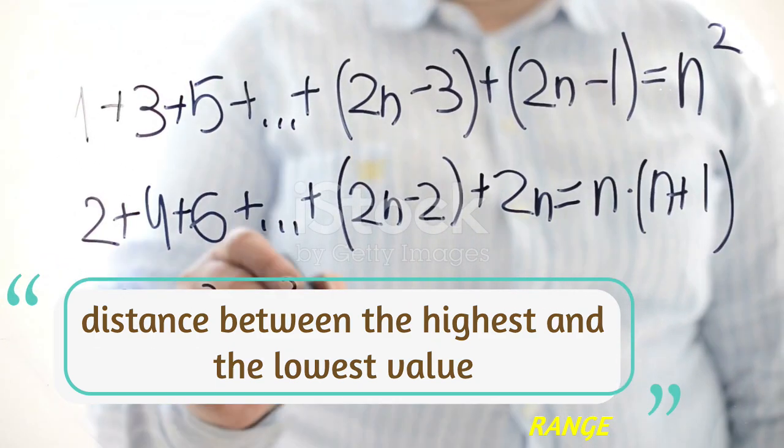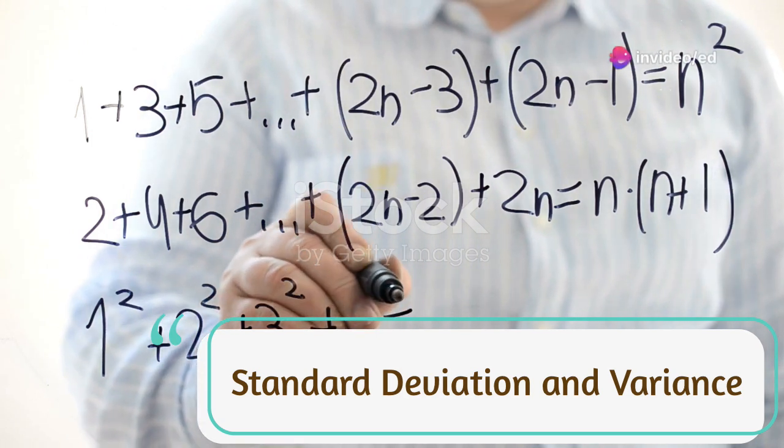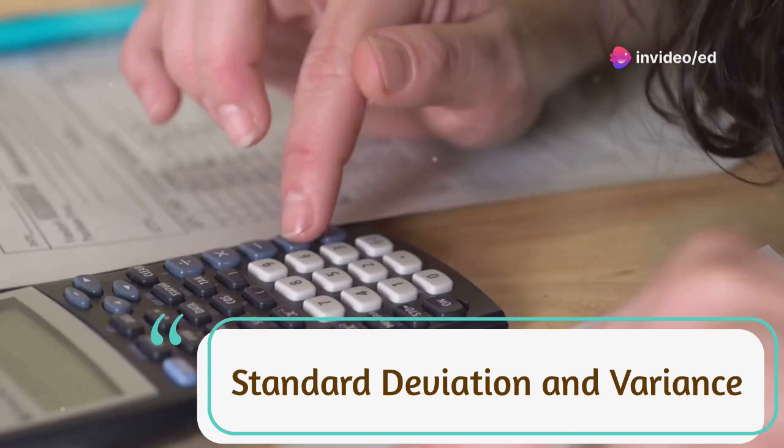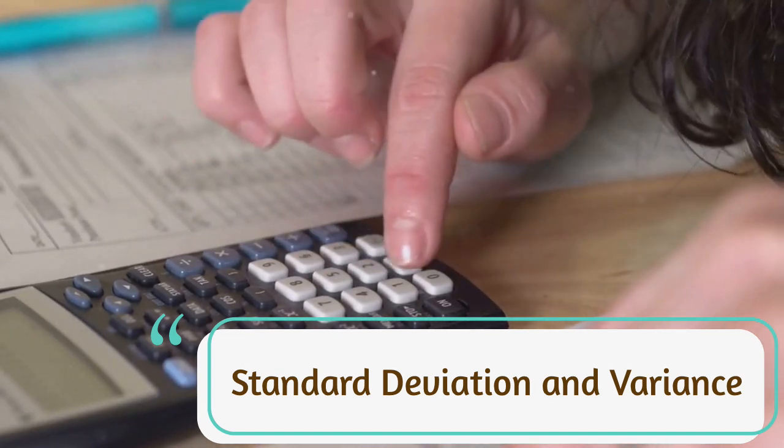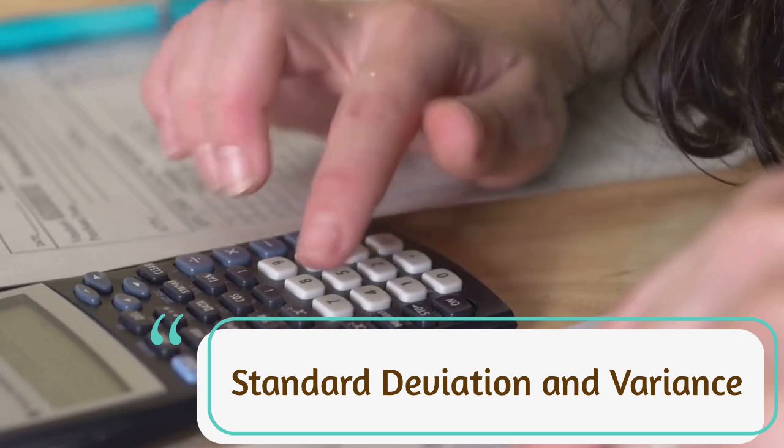Another important measure is variance, which quantifies the average square differences between each score and the mean. This measure provides insight into the overall spread of the data. For instance, if the dataset is 2, 4, 6, 8, 10, and the mean is 6, the variance would be 8.